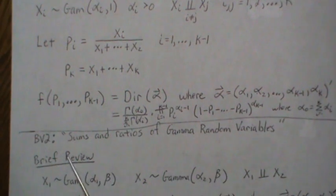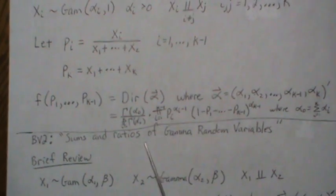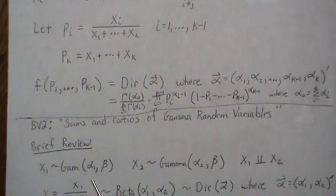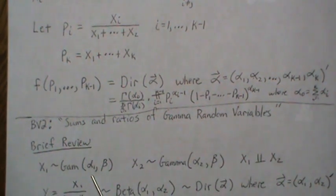And I also have another video called Background Video 2, Sums and Ratios of Gamma Random Variables. And there we derive a beta distribution. And now beta distribution is a Dirichlet distribution with only alpha 1 and alpha 2. Now, often you call it, but, yeah, that's it.